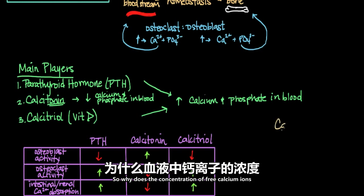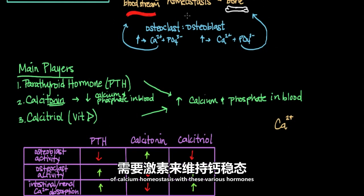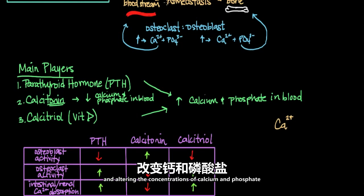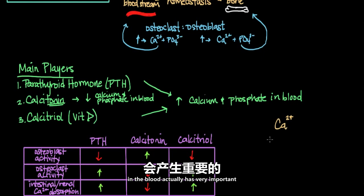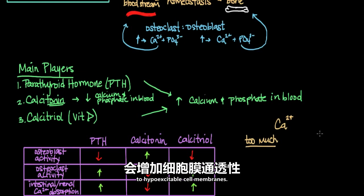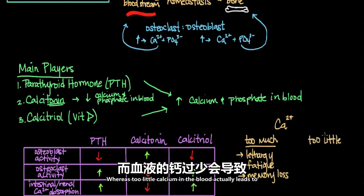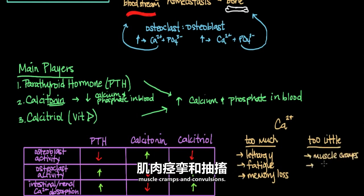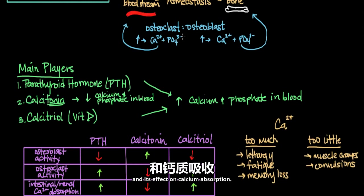So why does the concentration of free calcium ions in the blood matter so much? Why does our body have this elaborate system of calcium homeostasis? The concentration of calcium ions in the blood has very important physiological effects. Too much calcium leads to hypo-excitable cell membranes, resulting in lethargy, fatigue, and memory loss, whereas too little calcium in the blood leads to muscle cramps and convulsions. As you can see, the endocrine system plays a critical role in calcium homeostasis through its effect on bone remodeling and calcium absorption.